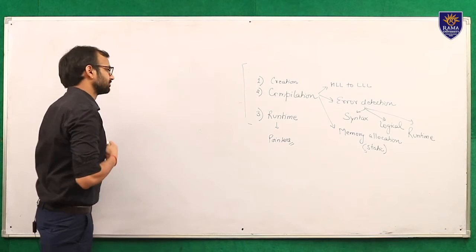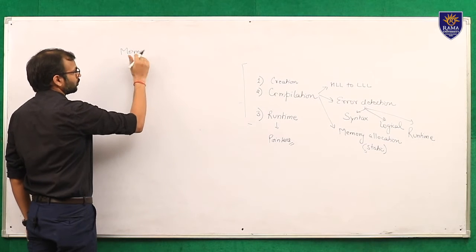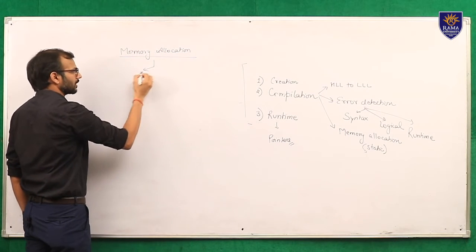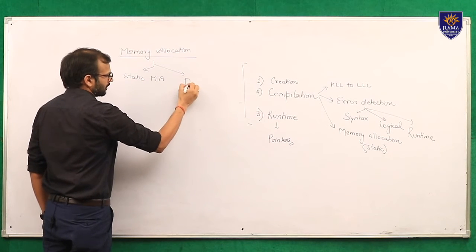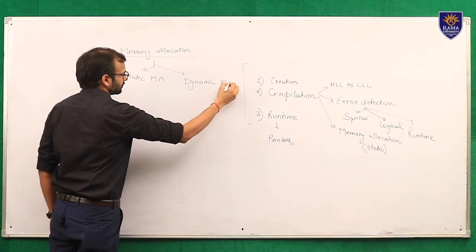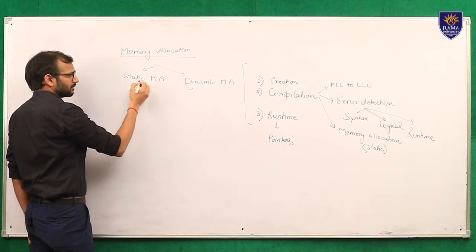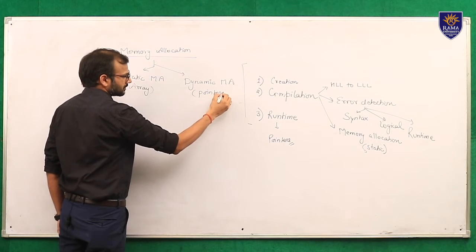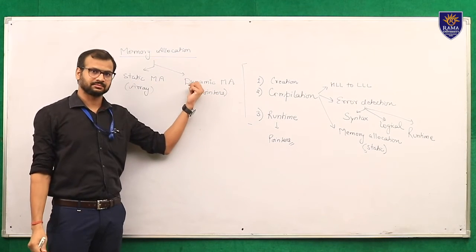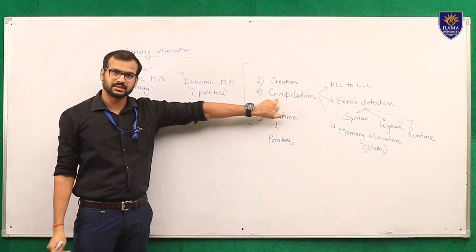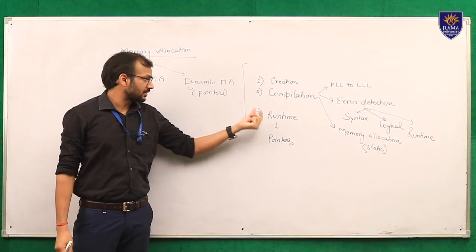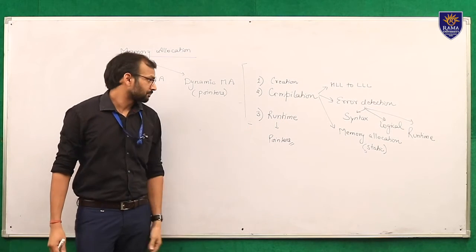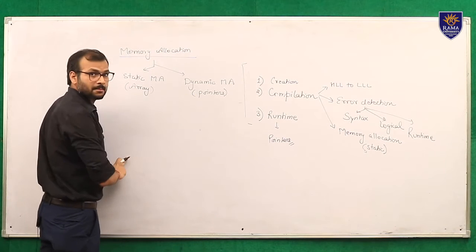Memory allocation is of two types: static memory allocation and dynamic memory allocation. An example of static memory allocation is the array. Dynamic memory allocation can be done by using pointers. In static, the memory allocation takes place in the compilation phase, while dynamic memory allocation means memory is allocated at the time when the value is given to the program — that is, at runtime phase.